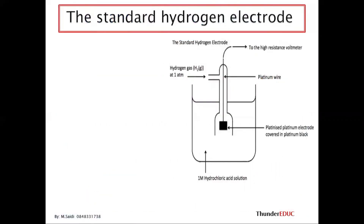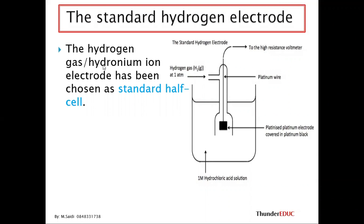Let's look at the standard hydrogen potential. Why do we start with it? Because hydrogen is regarded as the benchmark — it is the one we compare everything to. Above hydrogen on the table means the cell can continue; below it means the cell cannot continue. Hydrogen, or the hydronium ion electrode, has been chosen to be the standard half-cell.